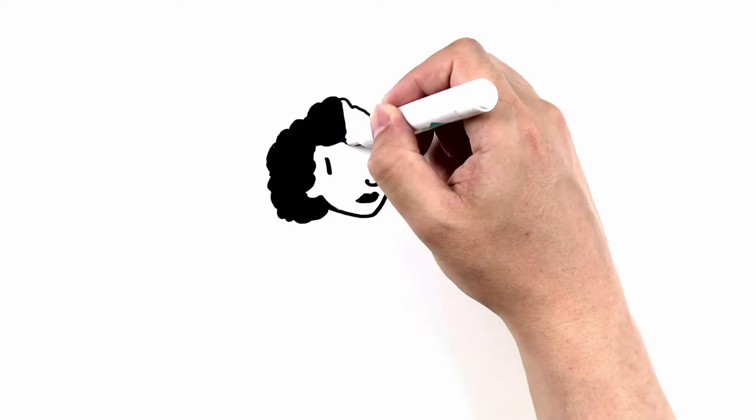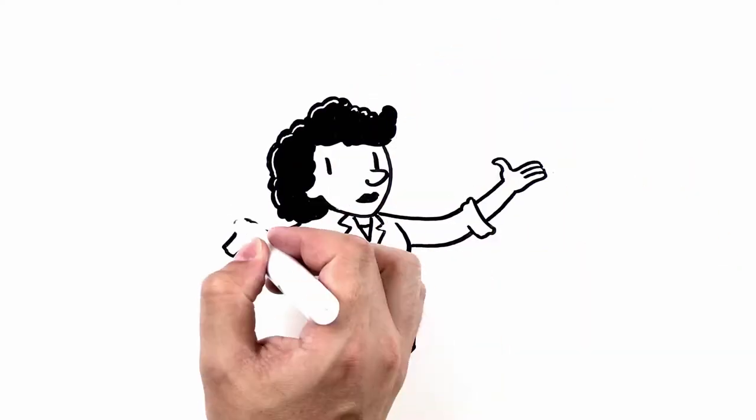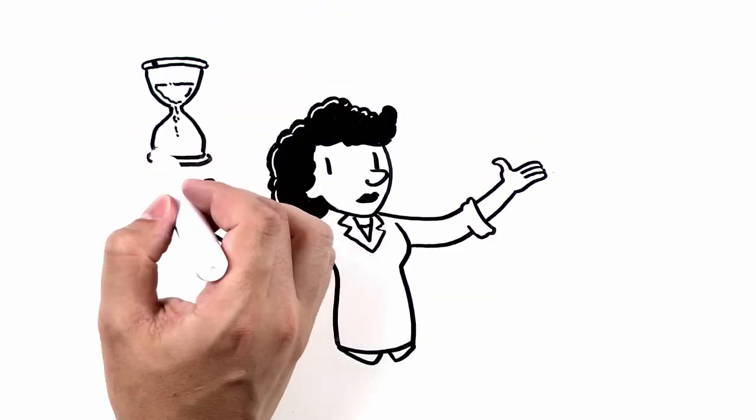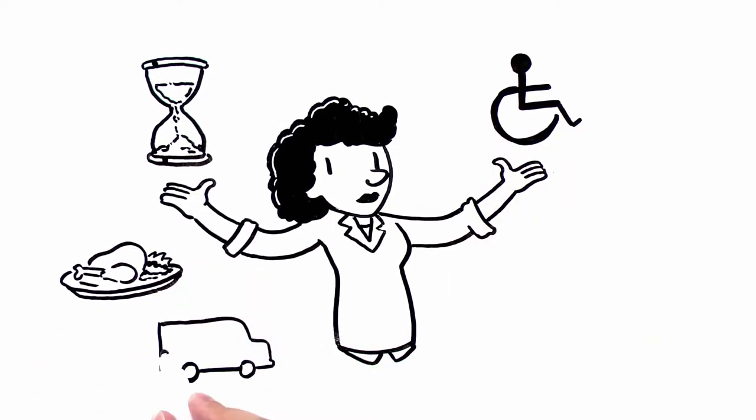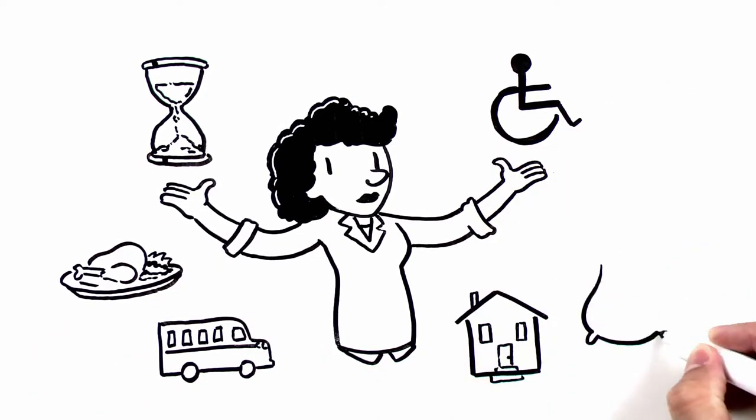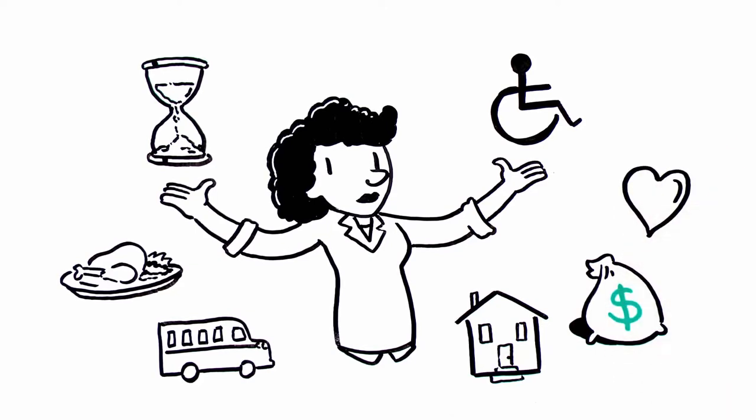As an organization that supports aging and disability services, do you wish you had the time and resources to help even more people who need home-delivered meals, transportation, chore services, benefits counseling, or a friendly visitor?